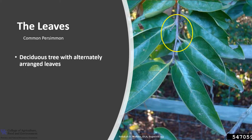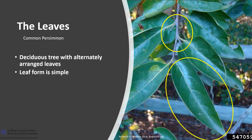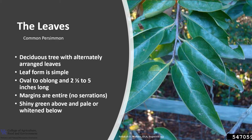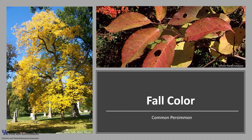Persimmon is a deciduous tree with alternately arranged leaves, as you can see in the photo. The leaf form is simple, made up of one blade. The leaves are oval to oblong and about two and a half to five inches long. The margins are entire, meaning no serrations, and the leaf is shiny green above and pale or whitened below. Fall color varies from yellowish to reds with some purple, adding to its attraction as a landscape tree in addition to its form and attractive bark.